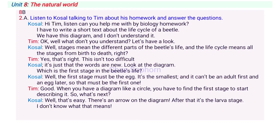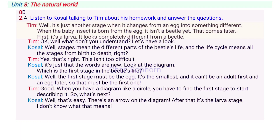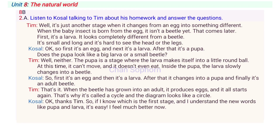After that, it's the larva stage. I don't know what that means. Well, it's just another stage when it changes from an egg into something different. When the baby insect is born from the egg, it isn't a beetle yet. That comes later. First, it's a larva. It looks completely different from a beetle. It's small and long and it's hard to see the head or the legs.